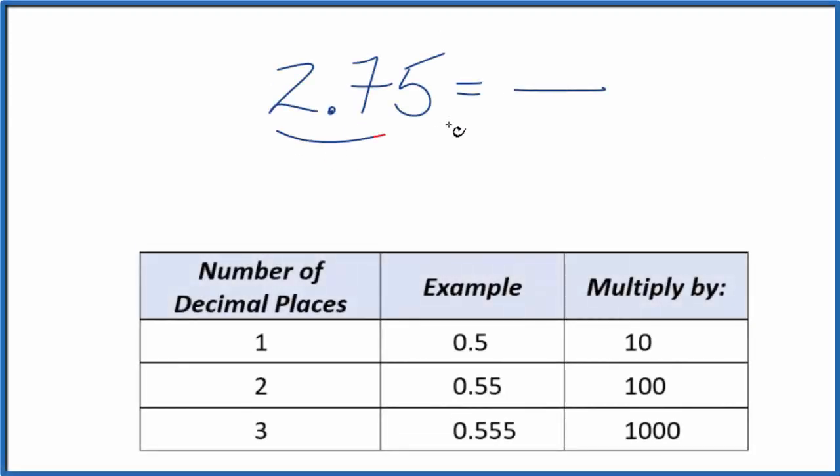If you're asked to convert 2.75 to a fraction, we have a numerator over a denominator. Here's how you do it. First, let's call this 2.75 over 1. We're just dividing by 1 so we don't change the value, but now we have a start of a fraction.